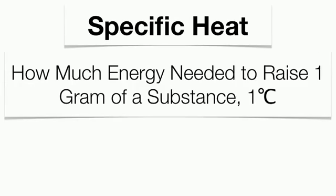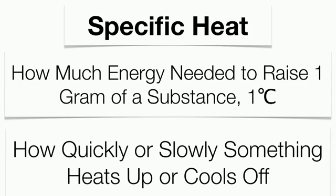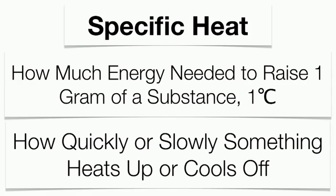The true definition of specific heat is basically how much heat energy is needed to raise one gram of a substance one degree Celsius. An easy way to remember that is basically how quickly or how slowly something's going to heat up or cool off.